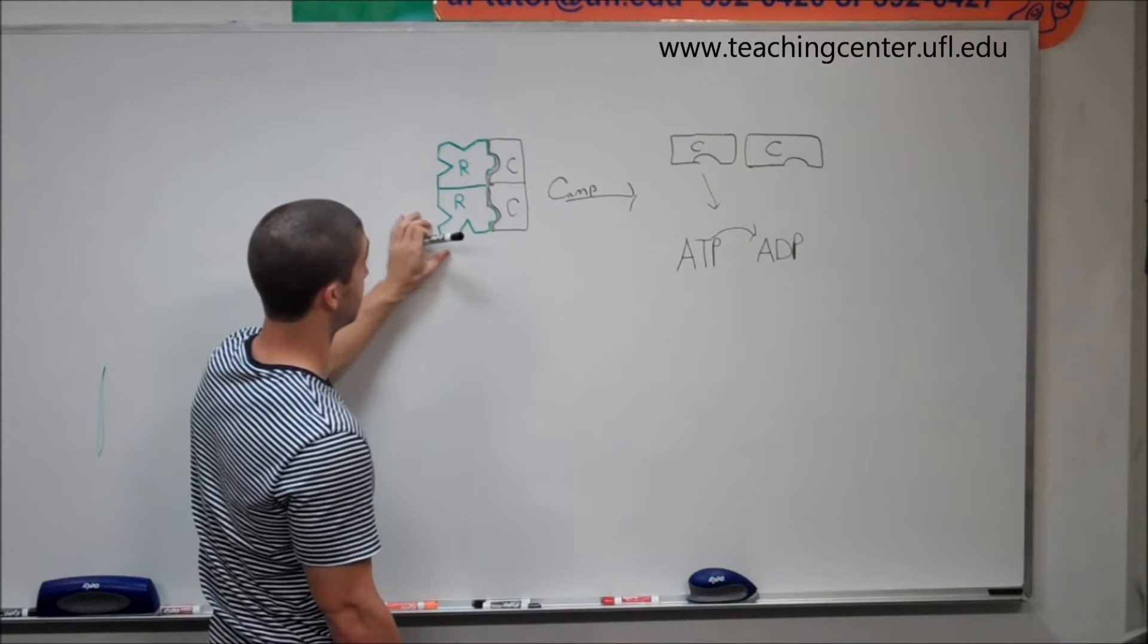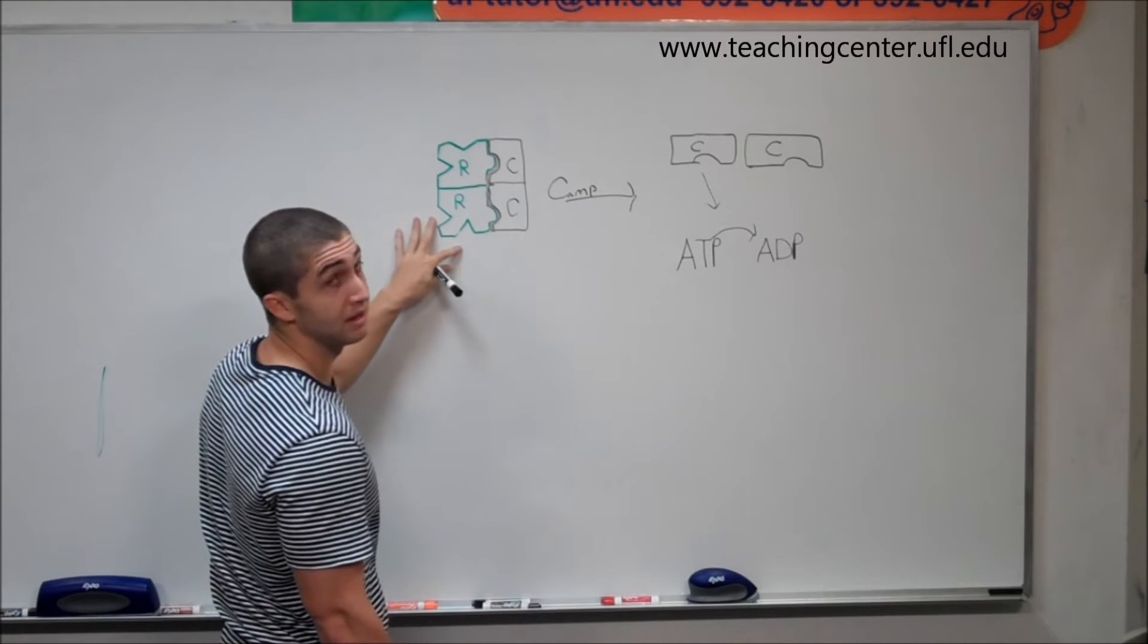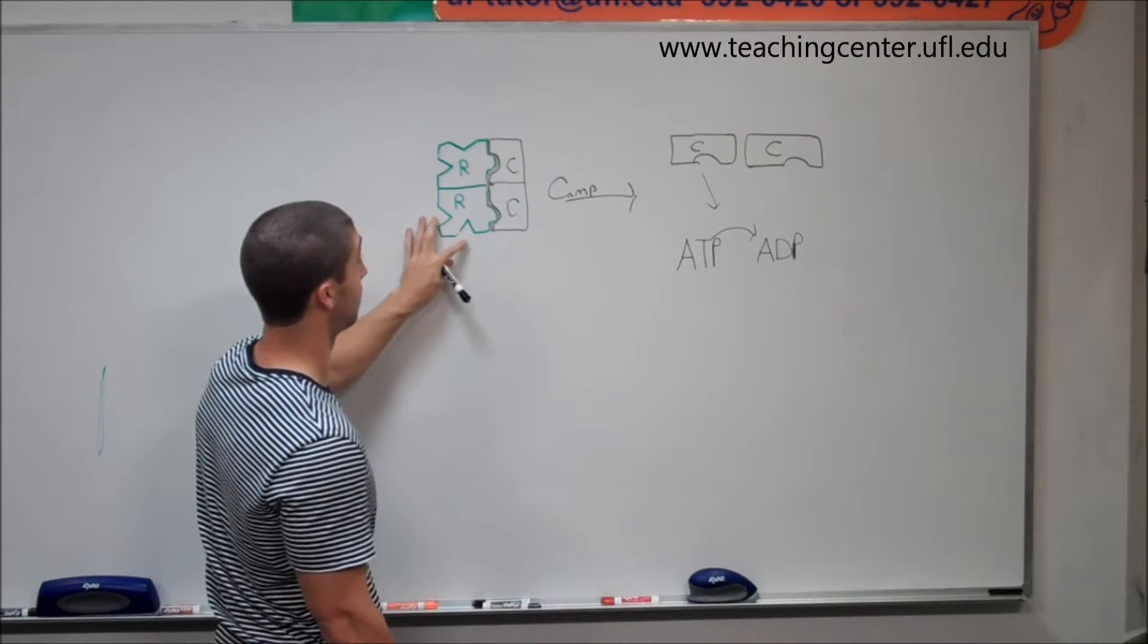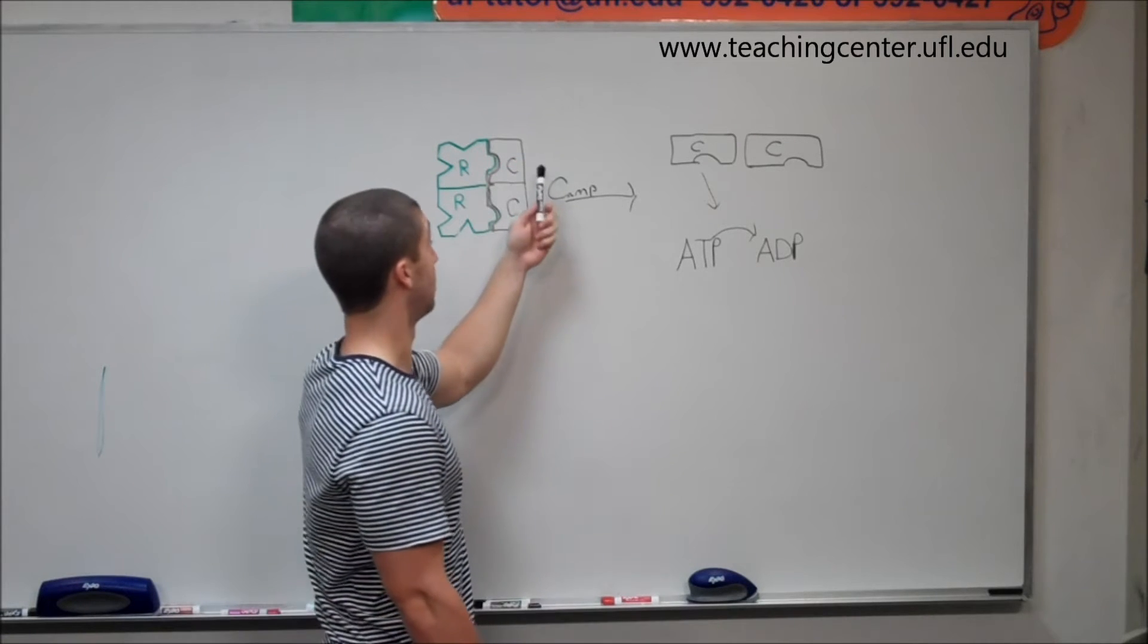So each of the two regulatory subunits have two spots for cyclic AMP to bind. So when cyclic AMP is high in the cell, it's going to bind to protein kinase A at these two regulatory sites.